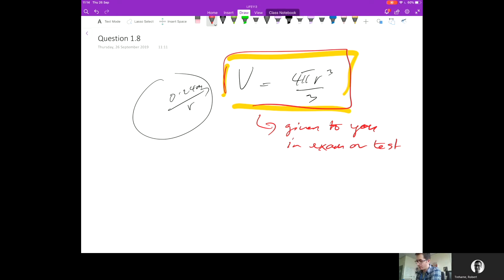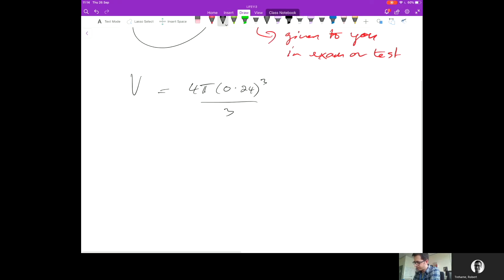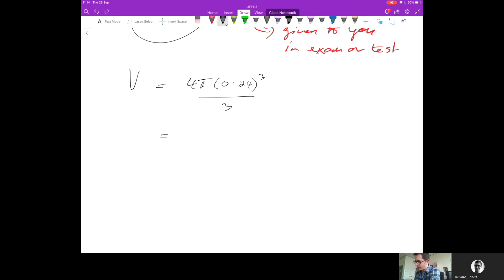Volume equals 4π times r, which is 0.24, cubed, all over 3. If you calculate that on your calculator, you will get an answer of 0.0579058 meters cubed.